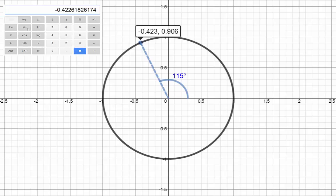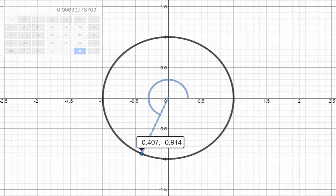If we move down to the third quadrant, you can see that both the x and y coordinates are negative. So the cos and sin values are both negative.